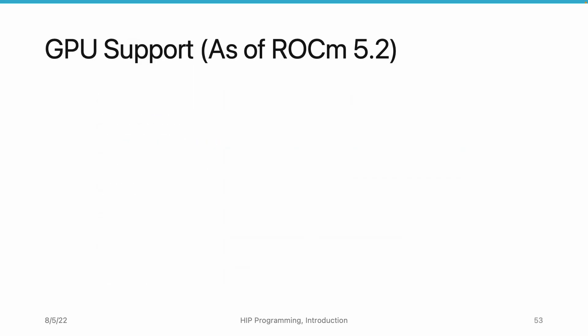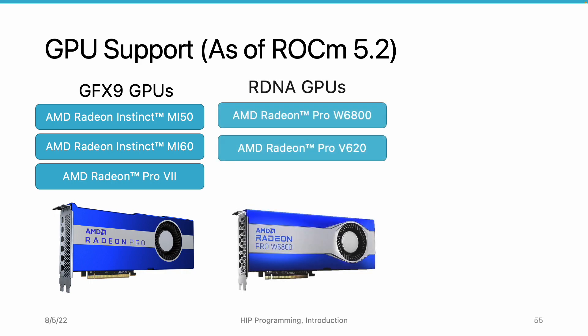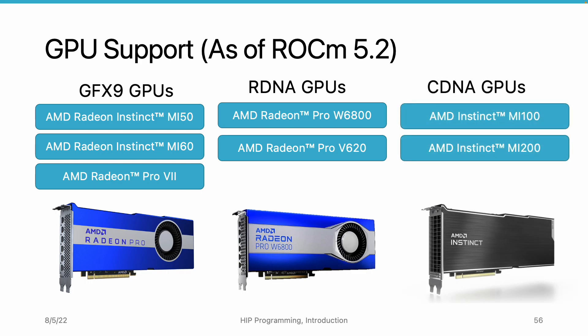In terms of GPU support, the ROCm platform supports a list of cards. Most of them are high-end and compute-oriented GPUs. As of ROCm 5.2, which is the most recent release, ROCm supports GFX 9 GPUs including the AMD Radeon Instinct MI50, MI60, and the Pro 7 GPU. For RDNA GPUs, ROCm supports W6800 and the V620 GPUs. ROCm also supports CDNA GPUs including MI100, MI210, and MI250 GPUs. This tutorial will mainly be based on MI50, MI100, and W6800.